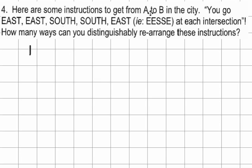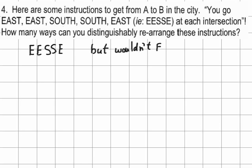Here are some instructions to get from A to B in the city. Your partner says: go east, east, south, south, east. But if you're on a grid, you could do all your souths first and then your easts. Wouldn't east, east, east, south, south work too? That would get you to the same spot.